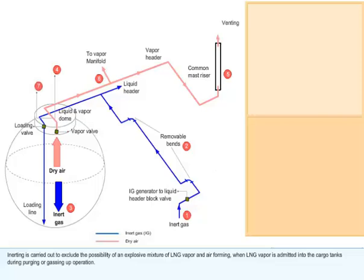Inerting prior to purging. Inerting is carried out to exclude the possibility of an explosive mixture of LNG vapor and air forming when LNG vapor is admitted into the cargo tanks during purging or gassing up operation.